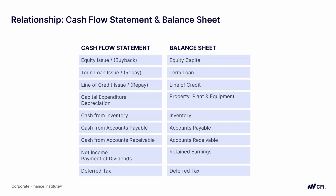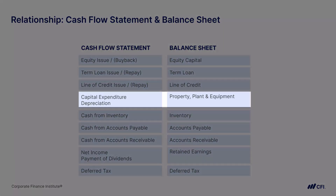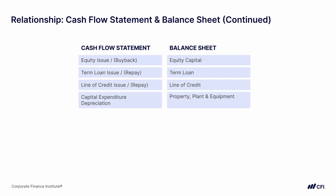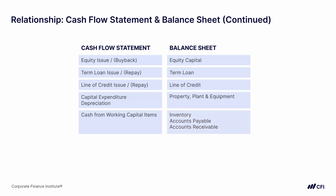The most important takeaway is understanding these paired sets of line items. Every time you see property, plant and equipment on the balance sheet, you need to make sure there are line items for capital expenditure and depreciation on the cash flow statement. One thing you may also see on the cash flow statement is one line item labeled as cash from working capital items. This is actually quite common — more common than breaking out line items individually for inventory, accounts receivable, and accounts payable. If you see this one line item, you need to understand that it needs to be paired up with all the working capital items on the balance sheet.